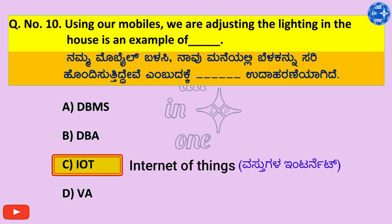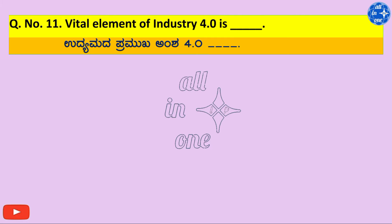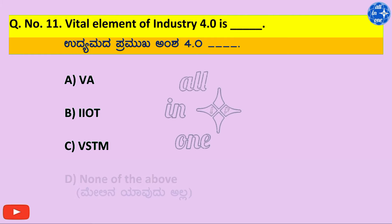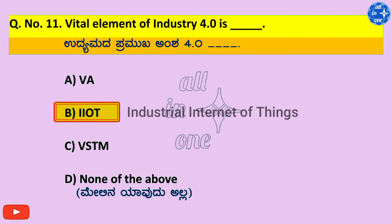Question number 11. Battle element of industry 4.0 is dash. Options: A. KAVA, B. IIOT, C. VSTM, D. None of the above. Right answer is B. IIOT — Industrial Internet of Things.